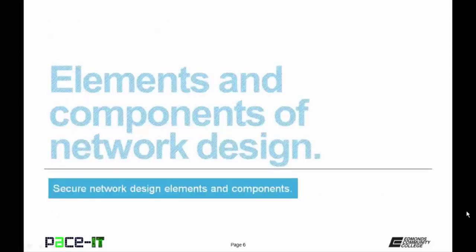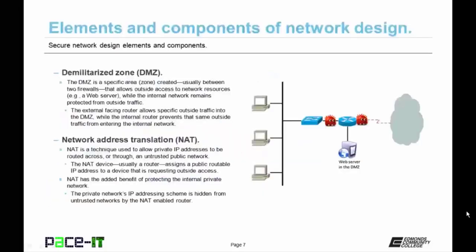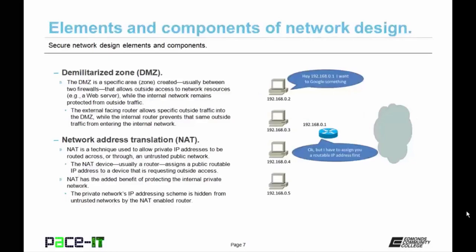Let's talk about elements and components of network design. First up is the demilitarized zone, or DMZ. The DMZ is a specific area, think zone, that is created — usually between two firewalls — that allows outside access to internal network resources such as a web server, while the internal network remains protected from that same outside traffic. The external facing router allows specific outside traffic into the DMZ, while the internal router prevents that same outside traffic from entering the internal network, keeping it safe and secure. Another design element is network address translation, or NAT.